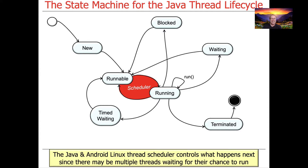Runnable means this thread is now available to be given to a core to be run — it doesn't mean it's running, it just means that it's available to be given to a core to run. The responsible entity that does this would be a scheduler, most typically the operating system scheduler, like the Android Linux scheduler if you're on Android, the GNU Linux scheduler if you're on Linux, or the Windows scheduler if you're on Windows. The scheduler is needed because there could be a whole bunch of threads waiting to run, but we only have a limited number of cores, so the scheduler has to be judicious about which thread it'll allow to run on the set of cores at any given point.